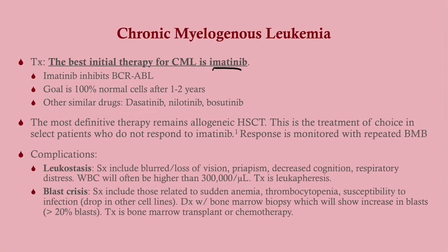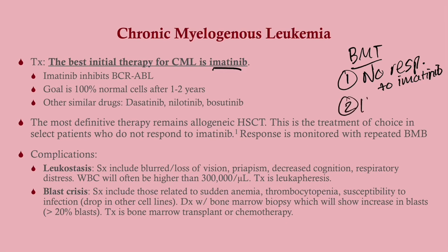The most definitive therapy remains allogeneic hematopoietic stem cell transplant — also called a bone marrow transplant — where stem cells come from someone else. We do a bone marrow transplant when: number one, there's no response to imatinib or other drugs; and number two, the patient must be healthy enough, because before transplant we have to eradicate their immune system, which is very dangerous. Imatinib has very good response rates and is a relatively clean drug with few side effects.